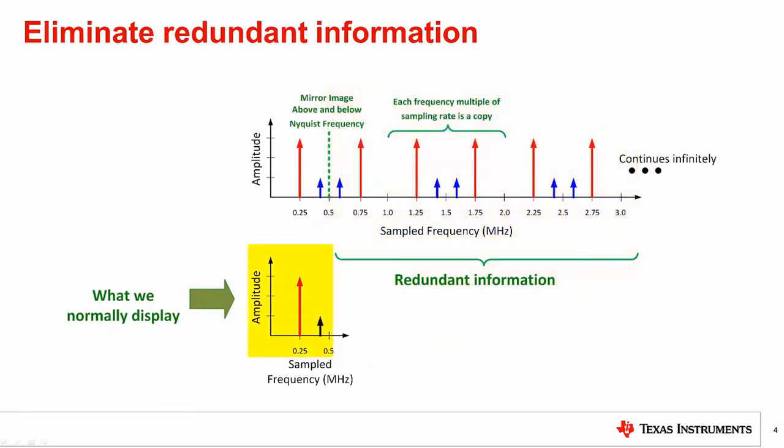Here we show the same example from the previous slide. The point is that in most cases everything above the Nyquist frequency is hidden as it is redundant information. So in this example, we show everything from 0 hertz to 0.5 megahertz because the Nyquist frequency is 0.5 megahertz. The frequency at 0.25 megahertz is the desired signal, and the frequency at 0.4 megahertz is an alias.